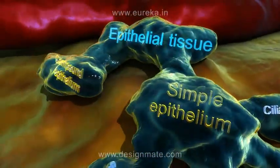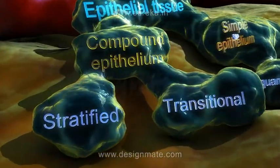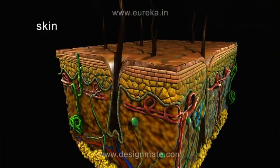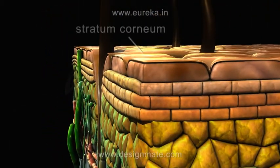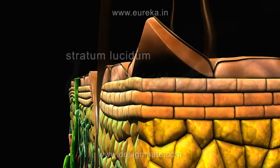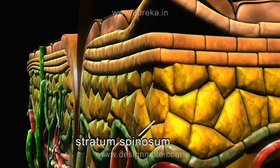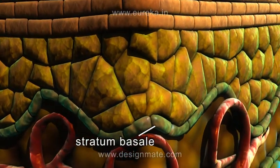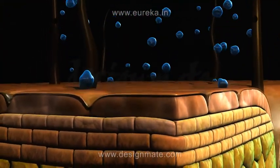The compound epithelial tissue can be divided into stratified epithelium and transitional epithelium. Stratified epithelium can be studied through the example of skin. It is called compound tissue because it has many superficial layers like the stratum corneum, stratum lucidum, stratum granulosum, and stratum spinosum. The living cells with dense protoplasm are found in the stratum basale. Stratum corneum has heavy deposition of keratin which makes it impervious to water.